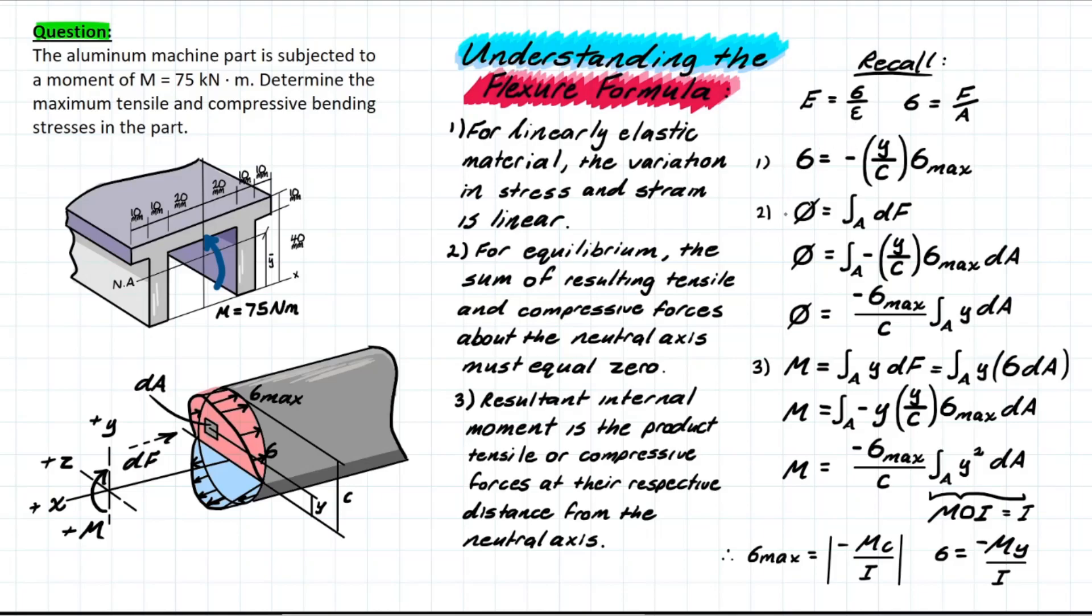And we ultimately deem the material as failing once it yields. So the moral of the story is that once we have a moment developed for our member assembly, we can then take that and determine the stresses that are internally developed to see if our member is passing or failing certain criteria.